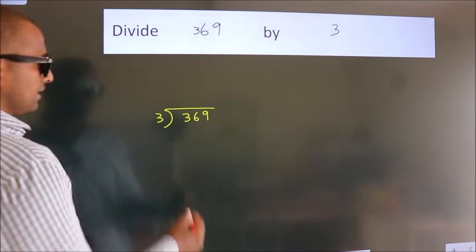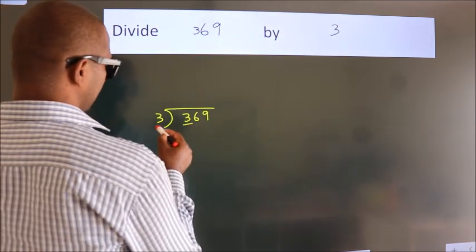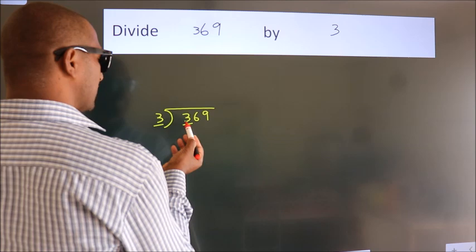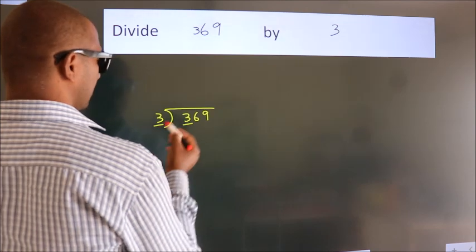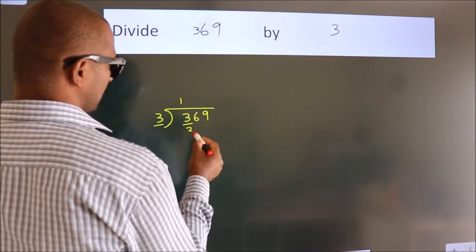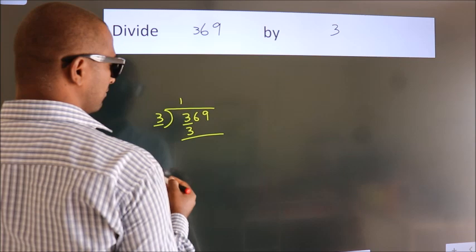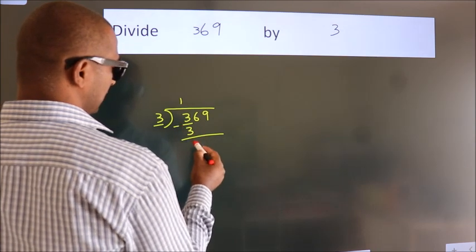Next, here we have 3, here 3. When do we get 3? In 3 table: 3 ones, 3. Now we should subtract. We get 0.